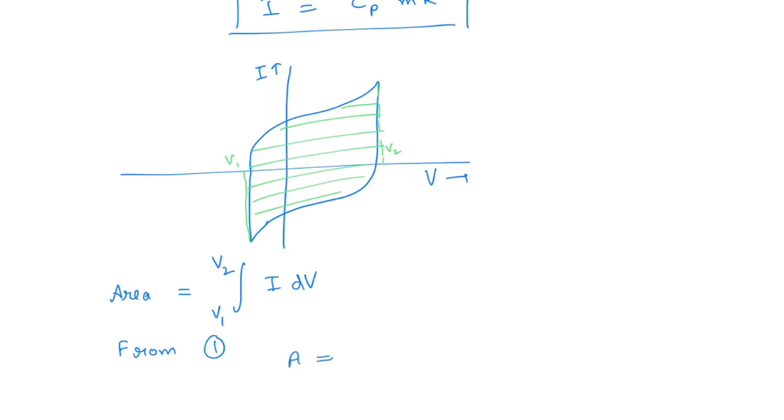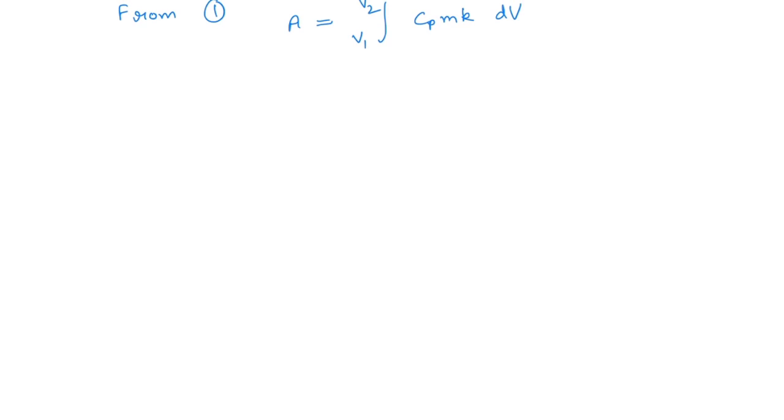Area equals the integral of cp times m times k dV from V1 to V2. Now cp and m and k are constants, therefore they come out from the integral, and area becomes...